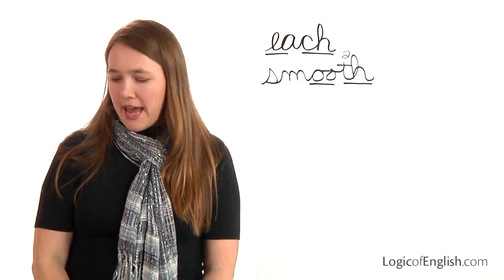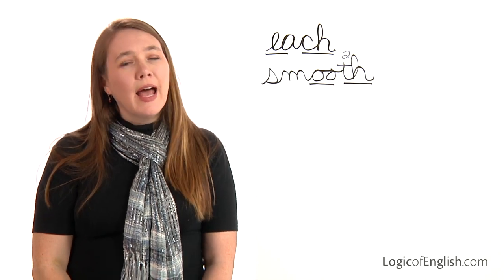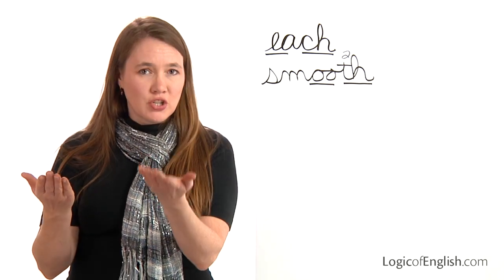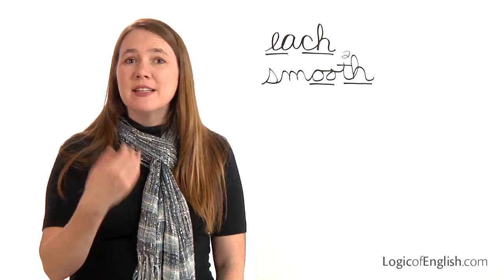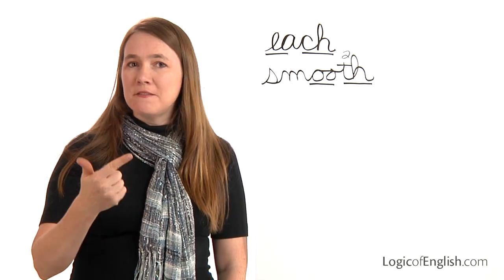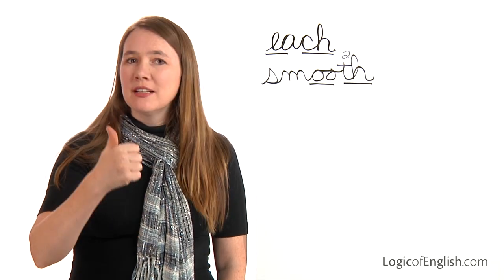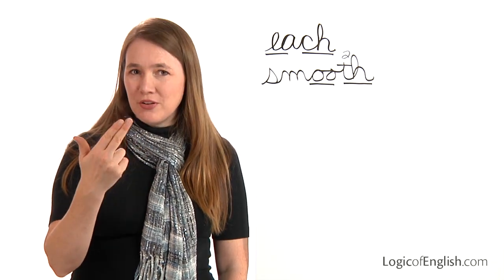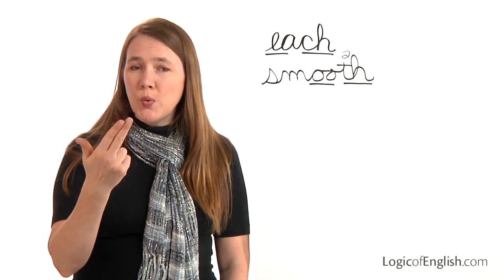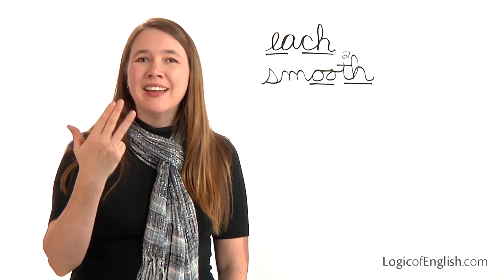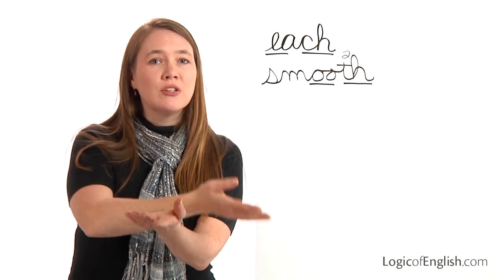The next word is 'afternoon.' We will go for a walk in the afternoon. How many syllables in afternoon? Three. The first syllable is 'af.' The second syllable is 'ter' — this is the er of her. And the third syllable is 'noon': N, oo, N. Go ahead and write afternoon, sounding it out as you write.